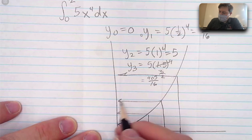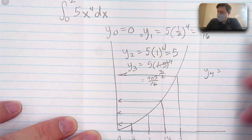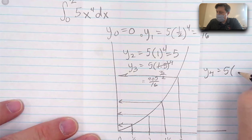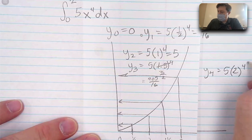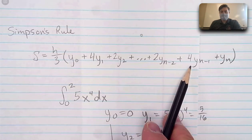That would be this value right here. So y to the 4th equals 5 times 2 to the 4th. Or in other words, 80. Now, I take all of those numbers and I just put them into Simpson's formula.